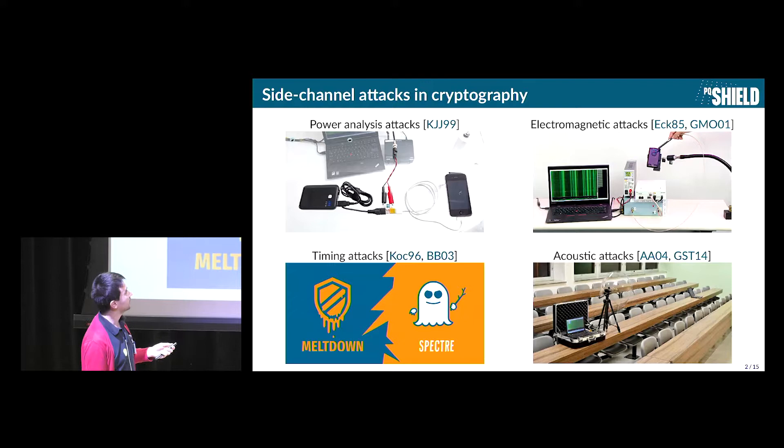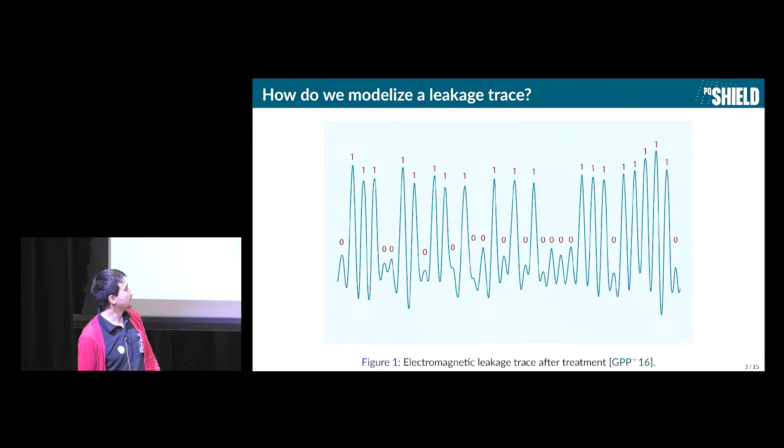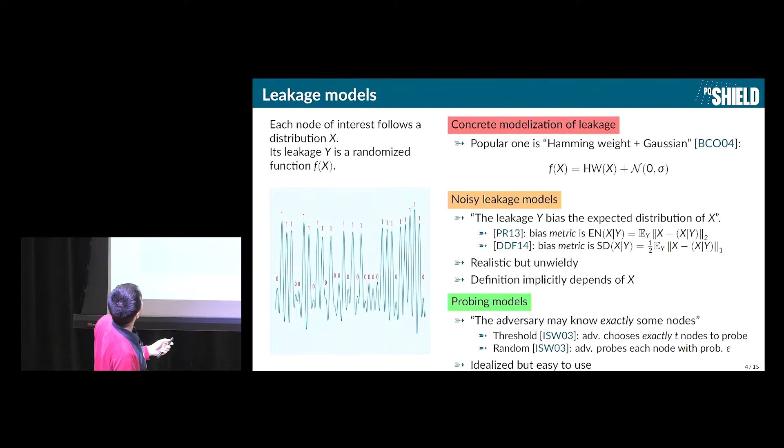But if you're generic, then chances are that you will lose in the efficiency because you will not take advantage of the specifics of each of them. But I'll get back to this later. So if you look at what a leakage trace looks like, so here in the example of electromagnetic leakage trace, and I think it's during the computation of ECDSA signature, we can see that the electromagnetic consumption will leak the bits of the private key. So it will be 0, 1, 1, 1, 0, 0, et cetera. And you can see that this is really not a binary information. The information that will be leaked to the adversary is not going to be 0 or 1, but it's going really to be some noisy function of this.